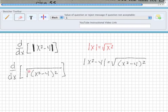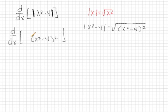It would probably be more convenient to write this square root in exponential form. So we're going to write this all as x squared minus 4 squared, and that's going to be to the 1 half. And now we're ready to take our derivative.